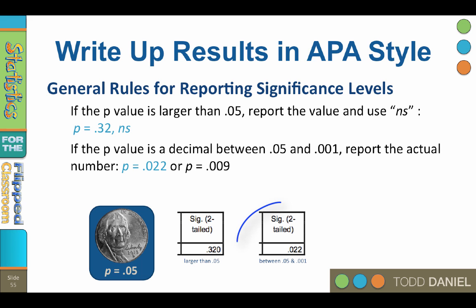If the value is a decimal between 0.05 and 0.001, report the actual number, such as p equals 0.022, or p equals 0.009.